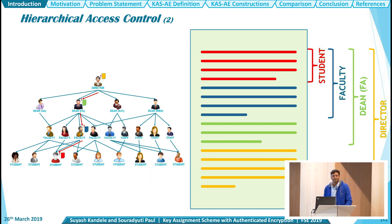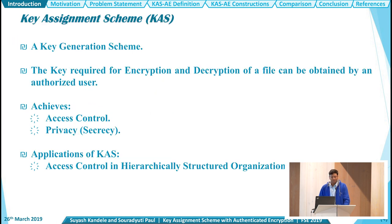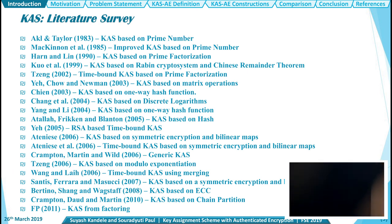This defines the hierarchical access structure for the data, and hierarchical access control means providing and restricting access to unauthorized ones. It requires a method to generate and retrieve the keys for accessible parts of the file. It finds its deployment in business and other areas in the private sector, and the solution is a key assignment scheme (CAS). A key assignment scheme is basically a key generation scheme where the key required for encryption and decryption of a file can be obtained by an authorized user only. It achieves access control and privacy, and finds its application in hierarchically structured organizations.